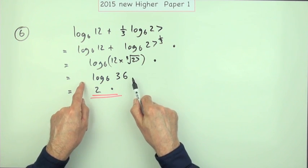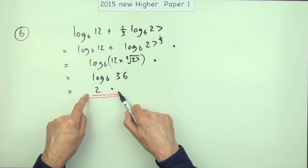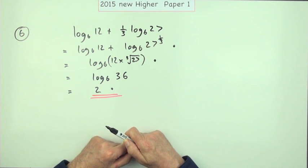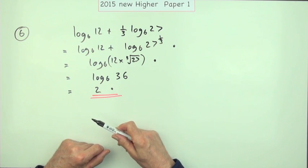Now notice the marking scheme simply says going from here to here is the mark. In other words, knowing what log base 6 means, you don't need...